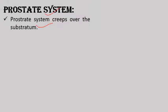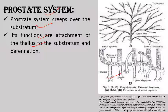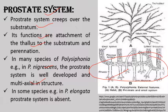The prostrate system creeps over the substratum. Its main function is attachment to the substratum and penetration into it. It bears root-like or holdfast-like structures. In many species of Polysiphonia, like Polysiphonia nigrescens, the prostrate system is well developed and multi-axial. In some species like Polysiphonia elongata, which is a free-floating species, the prostrate system is absent.